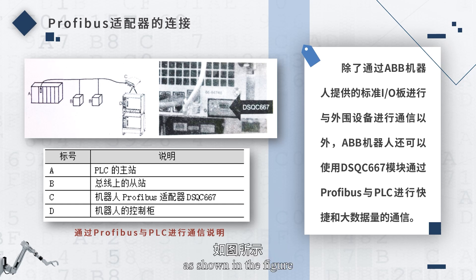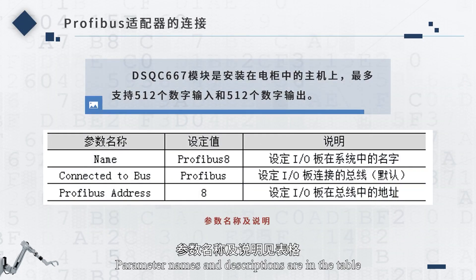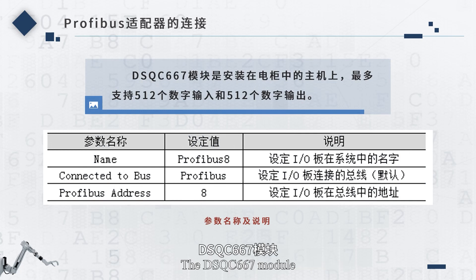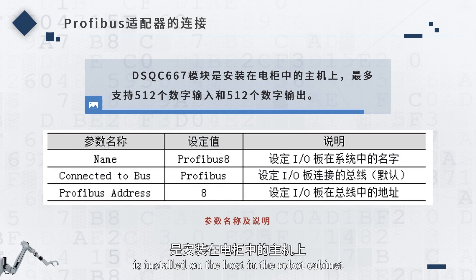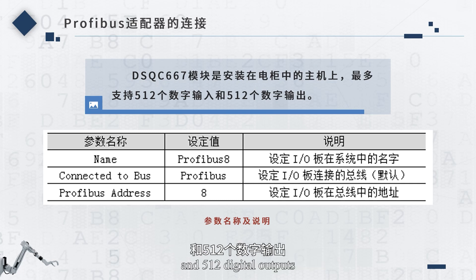As shown in the figure, ABB robots can communicate with PLC via DSQC667 PROFIBUS. Parameter names and descriptions are in the table. The DSQC667 module is installed on the host in the robot cabinet and supports up to 512 digital inputs and 512 digital outputs.